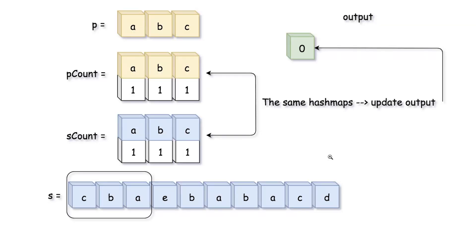Let's talk about how we are going to solve this. The idea is we are going to keep a count of p and a count of s. Remember, s is the longer string while p is the shorter string — the one we are looking for anagrams of inside s. So p is 'abc' in our example. We find the count of all characters in p, calling it p_count: a=1, b=1, c=1. Then we create a sliding window and move through s, updating the character count in every window.